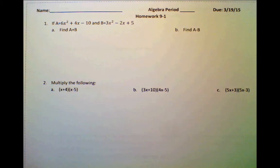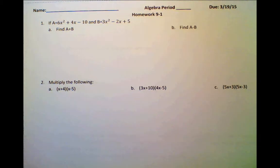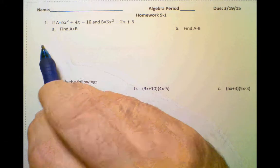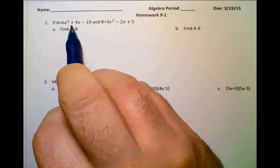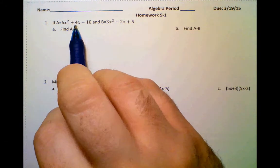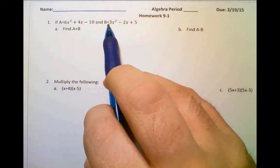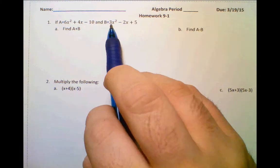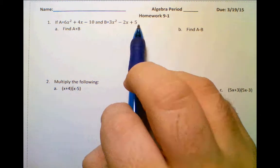Hi guys, welcome to homework 9-1. Let's jump right to it. The first problem: a is 6x squared plus 4x minus 10, and b is 3x squared minus 2x plus 5.